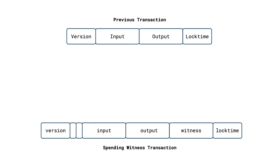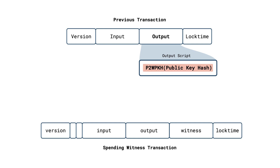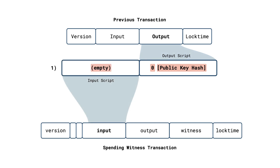What we have here is a previous transaction and the spending witness transaction. The previous transaction's output we are spending has a witness script. In this example, it is a pay-to-witness public key hash output script, which consists of a 0-byte data push and a 20-byte public key hash. The empty input script and data pushes from the witness script result in a valid stack state, since the top stack element is non-zero. However, no signature validation has occurred yet.